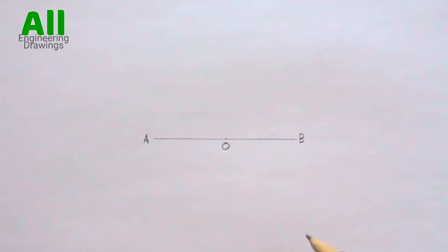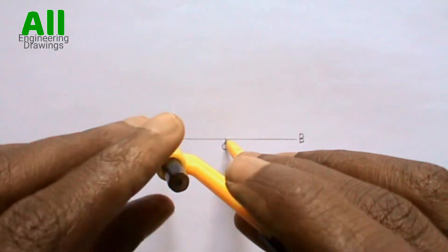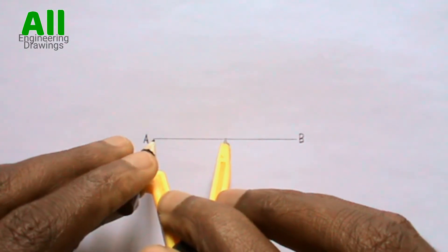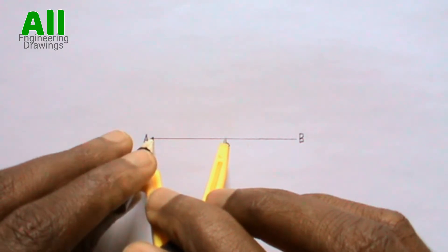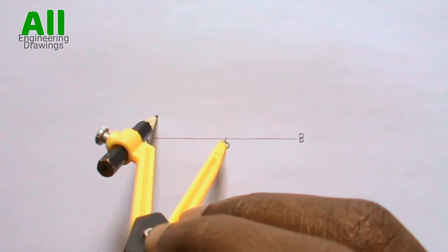Now place your compass on the point you marked, then extend your compass in such a way that your pencil is on point A, that is the end of the line. Then you can now draw a circle.